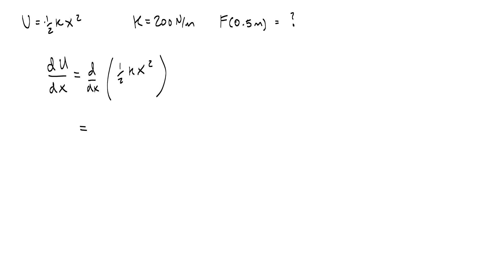And what I get is—oh, sorry, I should write it like this—equals negative F. So I'm going to get negative F equals k x, or that's like saying F equals negative k x, which happens to be Hooke's Law.